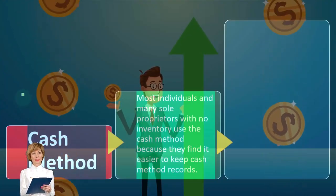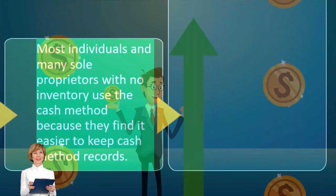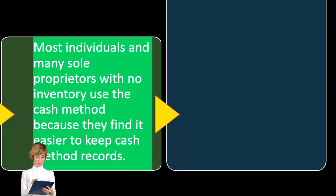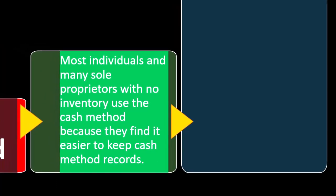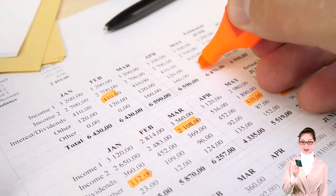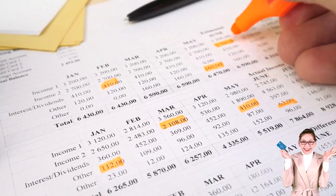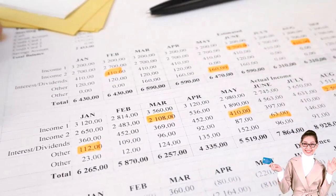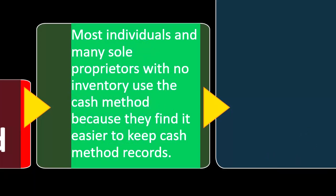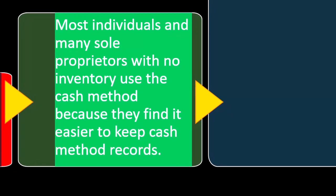Let's take a look at the cash method. We talked about in a prior presentation that it is important to get the correct method and period correct on your first reporting of a Schedule C, because although you have some leeway to pick the method you want, it is more difficult once picked to change accounting methods, because you would have to request from the IRS a change in accounting method. That is because the IRS wants consistency.